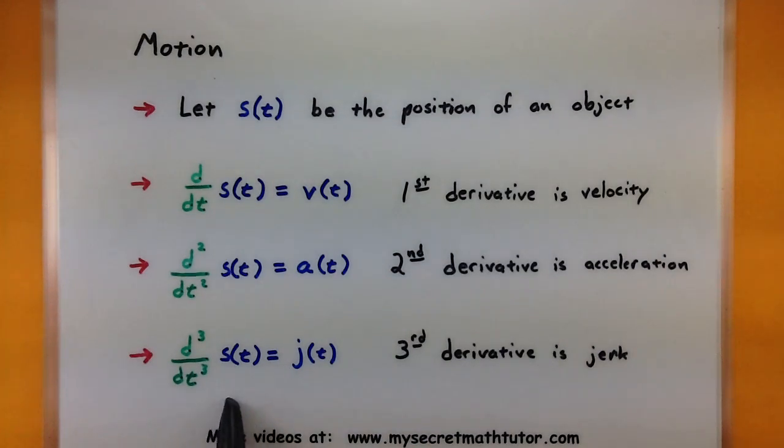Now with position, if you take one more derivative, so this is three derivatives of position, now you get jerk. So you can feel the lurch of a roller coaster as it starts to take off and other stuff like that.